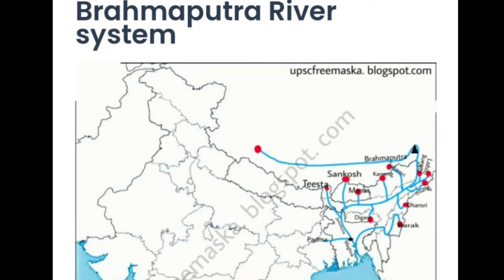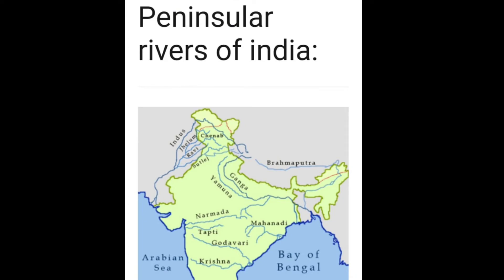Next are the Peninsular Rivers. These are seasonal rivers as their flow depends on rainfall. During the dry season, even large rivers reduce the flow of water in their channels. Most Peninsular Rivers originate in the Western Ghats and flow toward the Bay of Bengal — for example, Mahanadi, Godavari, Krishna, and Kaveri. These rivers make deltas at their mouths. Next are Tapi and Narmada, which are the only two long rivers that flow westward and make estuaries.